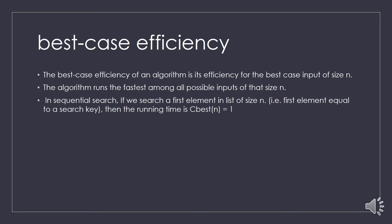Best case efficiency is when the algorithm finds the element in the smallest duration. For sequential search with elements 10, 20, and 30, the best case occurs when the key element appears as the first element in the array. In that case, C_best(n) equals 1, since the algorithm finds the key at the very first position.